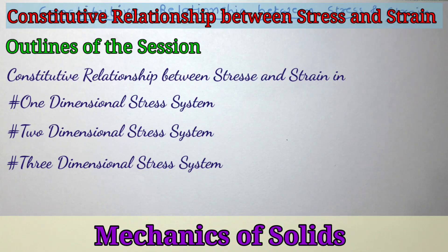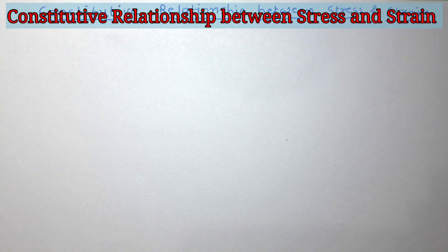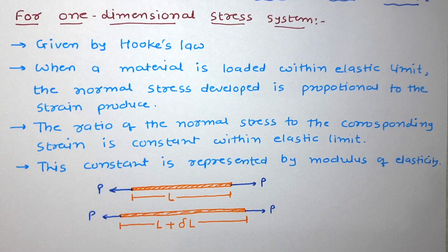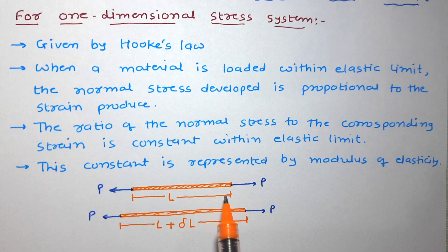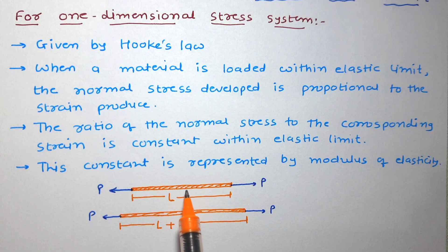Let us start with the constitutive relationship between stress and strain for one-dimensional stress system. For a one-dimensional stress system, the material is unidimensional, meaning it has only length — its thickness and width are negligible.